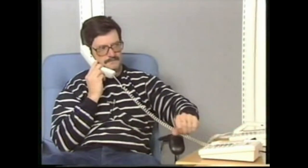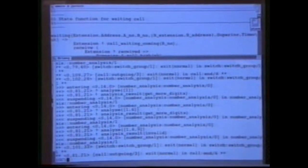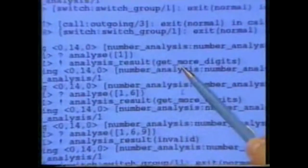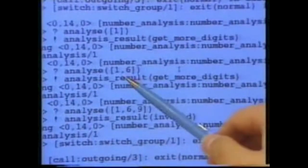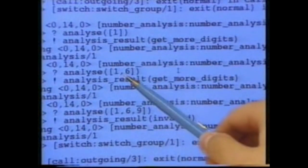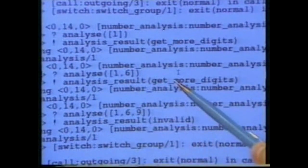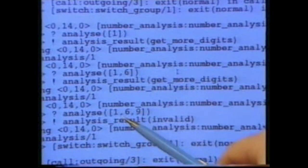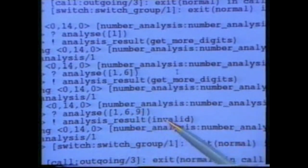I'll now dial an incorrect number. One, six, nine. Here again we see a symbolic trace of the communications to and from the number analyzer. Again, it got the request to analyze the digit one and return the result, get more digits. Then it got the request to analyze the digits one, six, and again returned the result, get more digits. Finally, it got the request to analyze the digits one, six, nine. But this time it returned the result invalid, as this number is invalid.